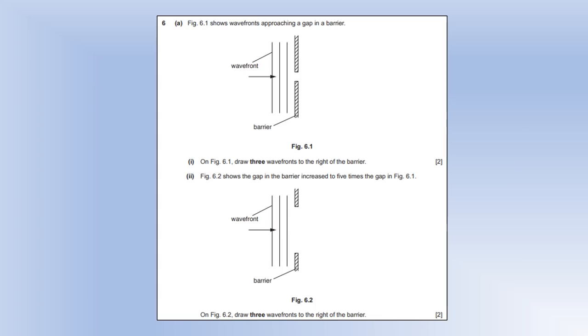So moving on to look at some waves. We've got some plane waves approaching a barrier. So draw three wave fronts on the right of the barrier for the first diagram. Well, we've got a gap size of similar size to the wavelength of the waves. So we're going to get the process of diffraction and they're going to spread out in all directions. So we're going to draw these semi circular waves, but the wavelength of them will not be affected. So the wavelength after the gap should be pretty much the same as the wavelength before.